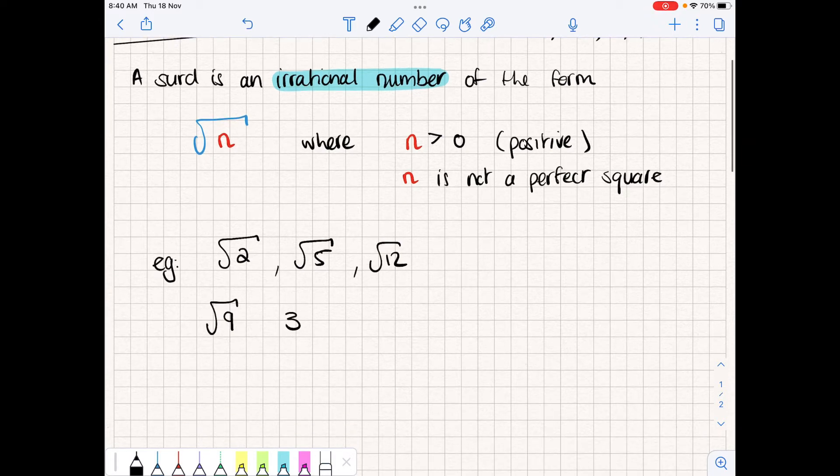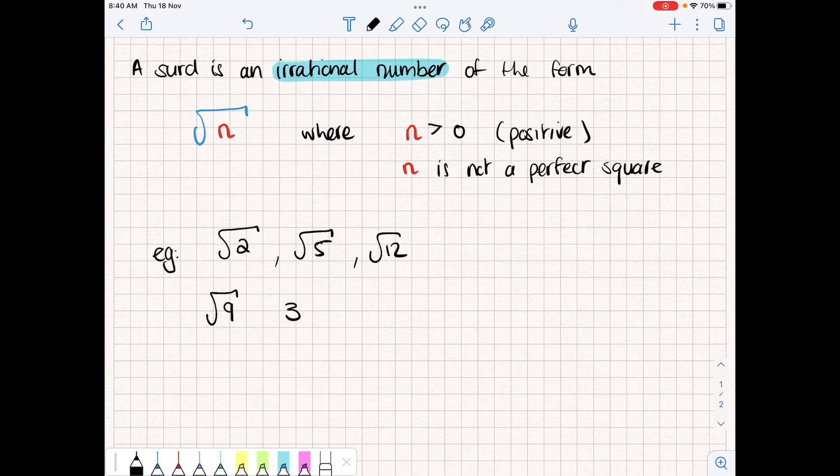Other examples of surds as a collective term are things like this: 2 plus the square root of 5. Now, while the number 2 is not a surd, when it's grouped together with a surd, the term collectively is considered a surd. Other forms could be the square root of 7 minus 3. Collectively, that's a surd.